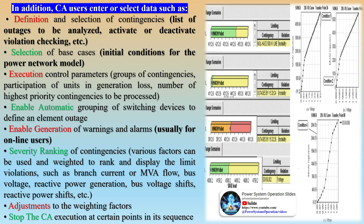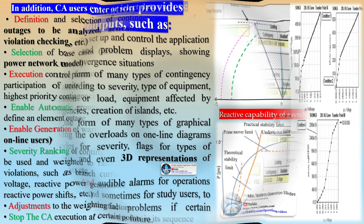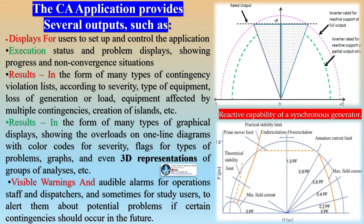Corrective actions determined through the analysis help in mitigating the consequences of a particular outage. System security is maintained by ensuring the power system can detect disturbances and analyze their impact. In essence, contingency analysis is a proactive tool that power system operators use to ensure the grid remains stable and secure even in the face of unexpected events. It is an essential part of maintaining uninterrupted power supply and preventing blackouts.